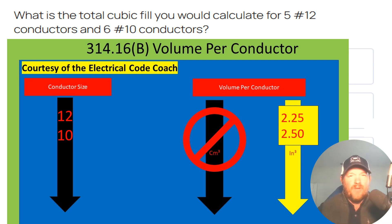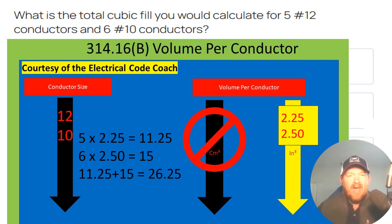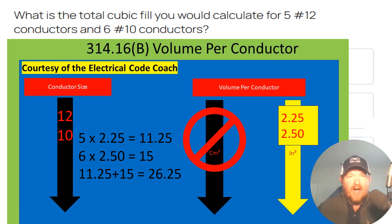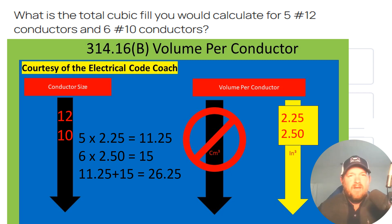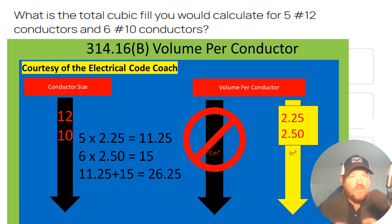All we have to do is some simple math. We have 5 number 12s, and we're going to multiply that by 2.25. Then we have 6 number 10s, and we're going to multiply that by 2.50. When we total that up, we find that these conductors are taking up 26.25 cubic inches of this box.